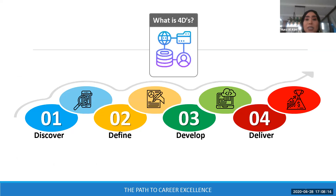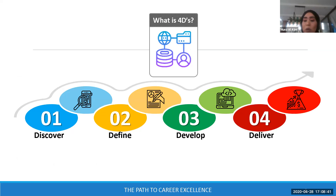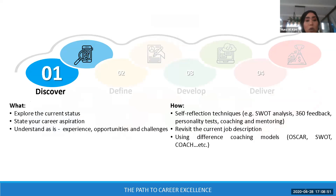What are the Four D's? I use this concept in any training I conduct, whether related to strategy, learning and growth, or projects. Every process starts with the letter D: the first is Discover, the second is Define, the third is Develop, and the last is Deliver. I will explain every process separately and what techniques are needed for each.